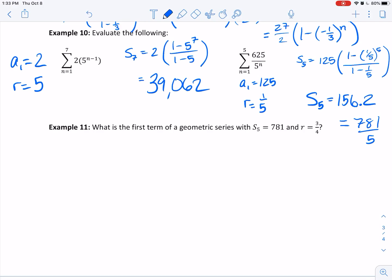Last example. What is the first term of a geometric series with S sub 5 equals 781 and r equals three fourths? The sum of a finite geometric series is that formula. We know that S sub 5 is equal to, we don't know the first term, that's what we're looking for. We do know that the common ratio is three fourths to the n. We know n, this becomes 5. And this is 1 minus three fourths. S sub 5 was actually equal to 781.